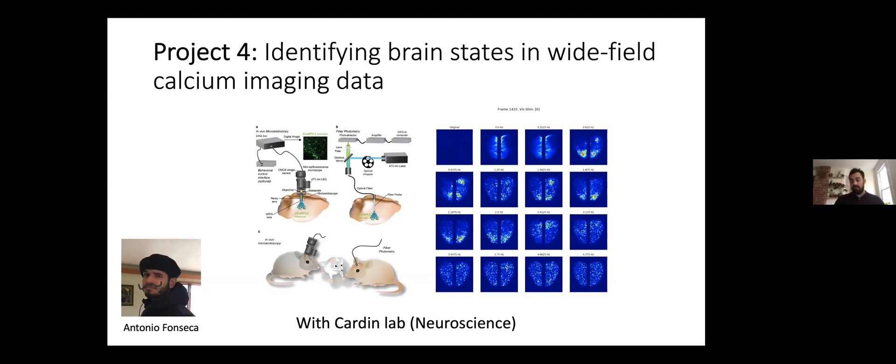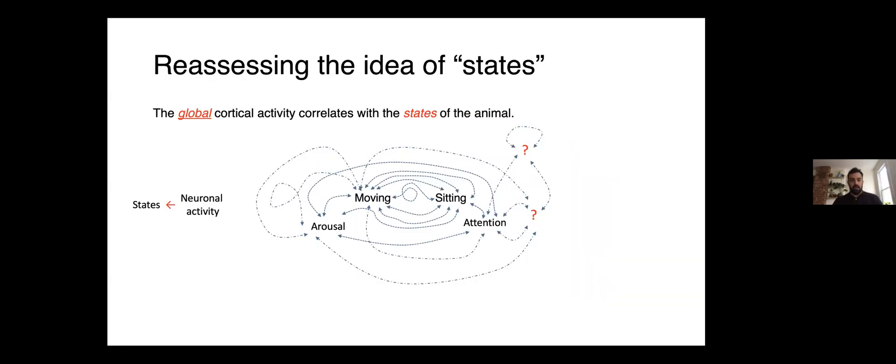The idea in this project is that we have these videos of the cortical activation. We also have data on the behavior and stimulation of the mice, and can we relate the two—can we predict the behavior from the brain activity and vice versa? Can we find certain motifs, certain patterns in this data that is predictive of certain behaviors? In particular, the idea in this project is to identify different states. As the mouse is doing different things—moving, sitting, looking at things—can we identify different states in the brain as well that relate with these activities?